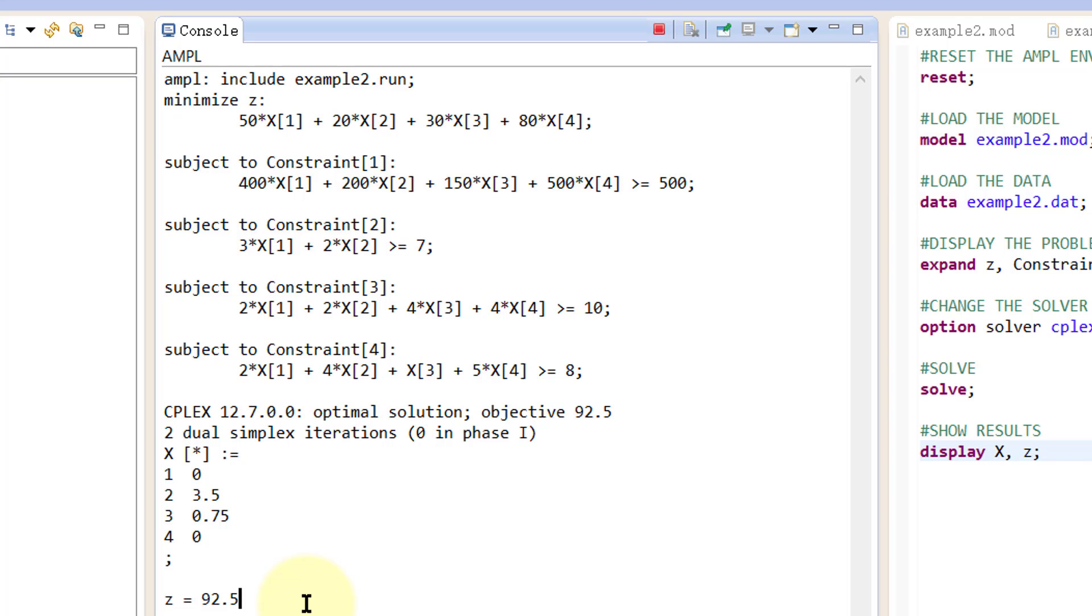Okay, that is how to separate the model file and the data file in AMPL for linear programming problems. Thanks for watching.